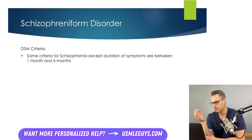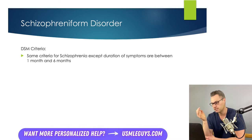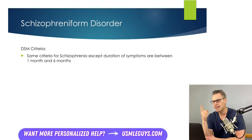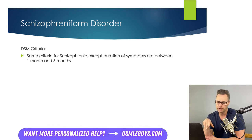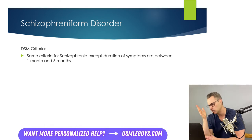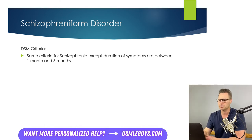Schizophreniform disorder is a disorder where the criteria for schizophrenia are met but the total duration ranges from one month to six months. To recap: in brief psychotic disorder, the episode lasts one full day but less than one month, with the patient returning to pre-episode functioning. A duration of one to six months is schizophreniform, and if it lasts longer than six months, we call it schizophrenia.